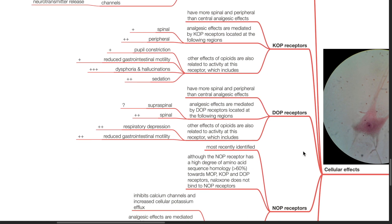DOP receptors have more spinal and peripheral than central analgesic effects. Analgesic effects are mediated by DOP receptors located at supraspinal and spinal regions. Other effects of opioids are also related to activity at DOP receptors such as respiratory depression and reduced gastrointestinal motility.